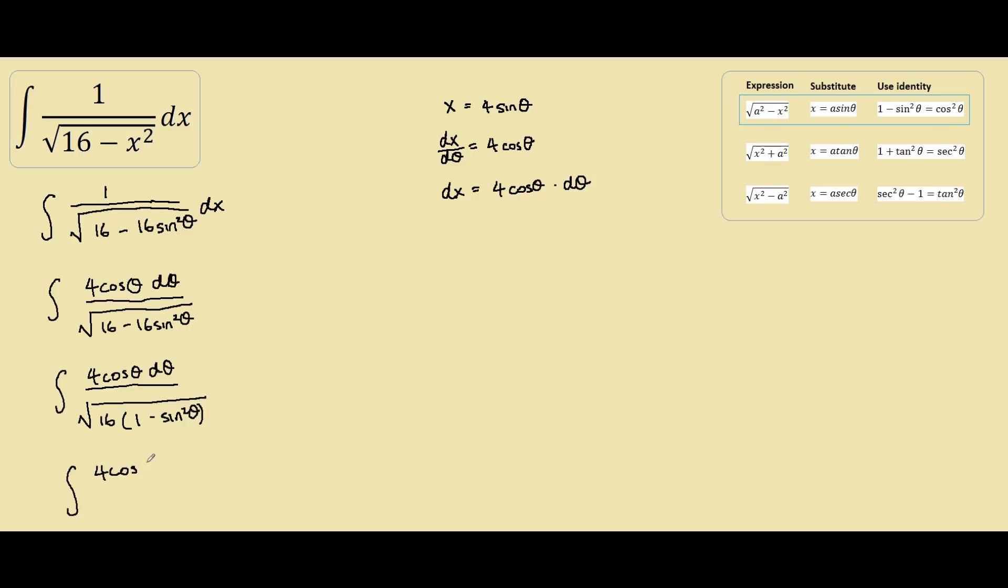We would get 4 cos theta d theta over the square root of 16 cos squared theta. And if we take the square root of this whole denominator, we get square root of 16 is 4 and square root of cos squared theta is just cos theta.